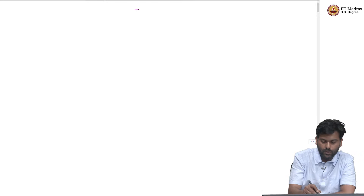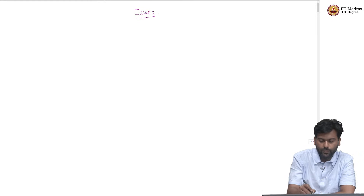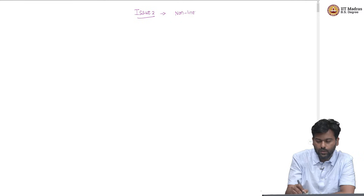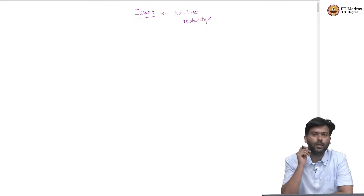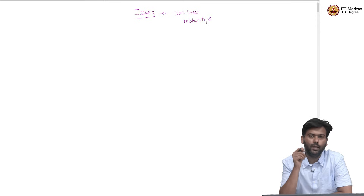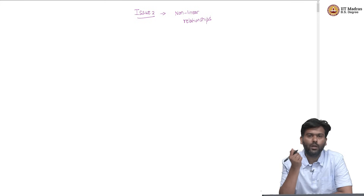Now we will look at Issue 2, which we also mentioned in the previous video. The issue we are going to talk about today is the issue of nonlinear relationships among features. We know that PCA is very good at identifying the linear relationships among features.